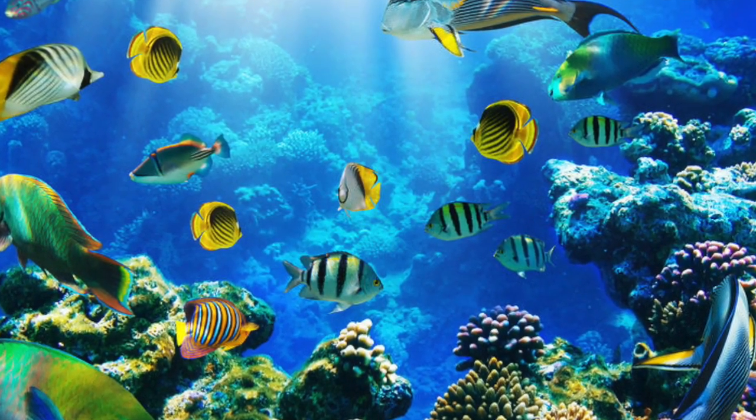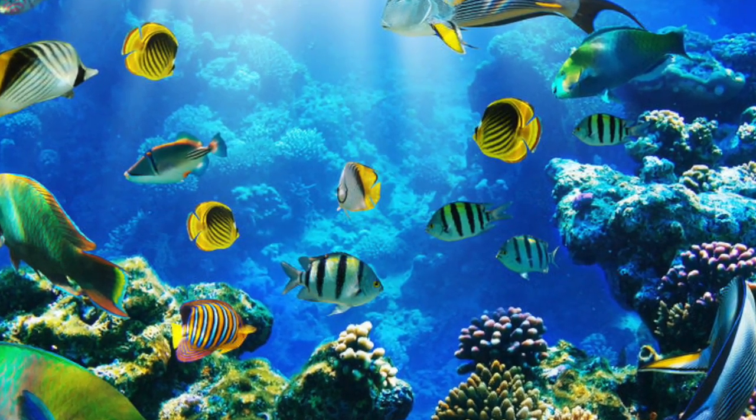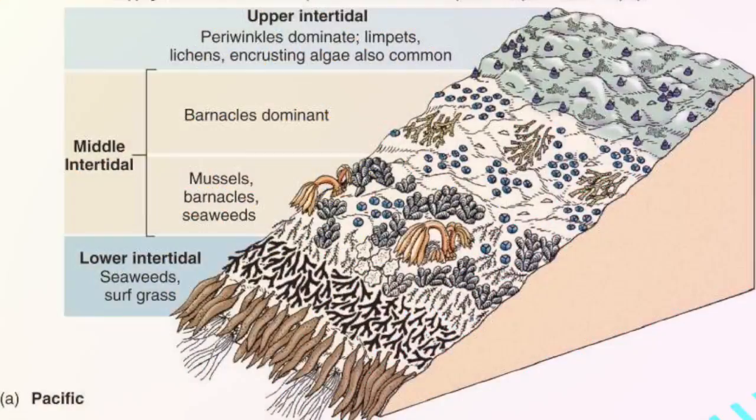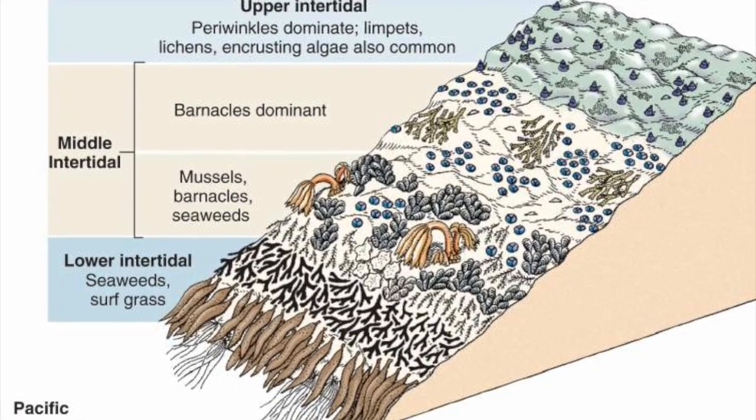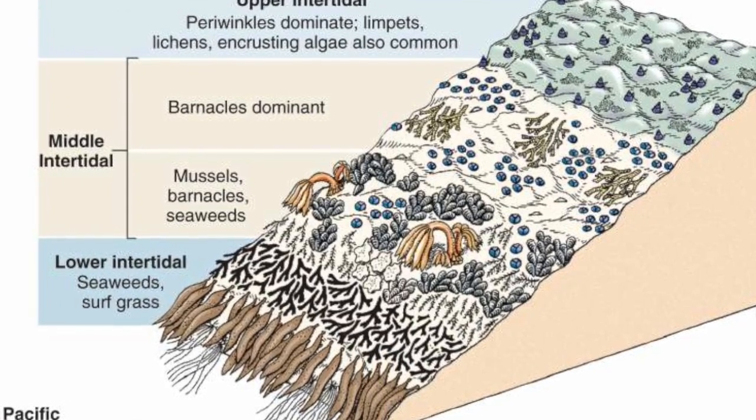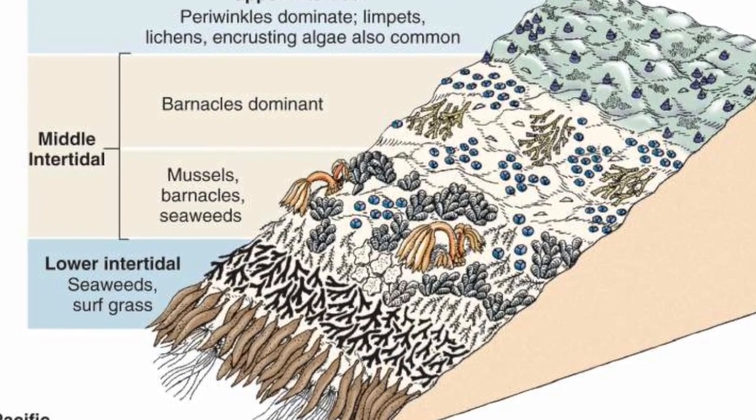Examples of things found here are barnacles, sponges, algae, mussels, and crabs. A lot of light is found here as well.